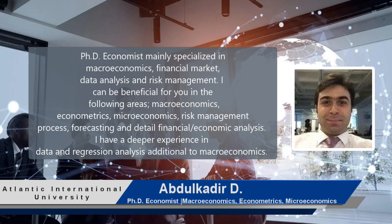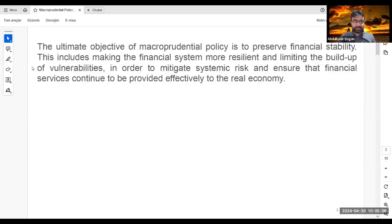Let's start with the definition of macroprudential policy. As you can see on the screen, the ultimate objective of macroprudential policy is to preserve the financial stability. You should always keep in mind that when we speak about macroprudential policy, its main and ultimate target is to maintain financial stability.